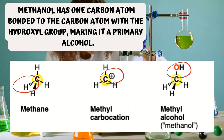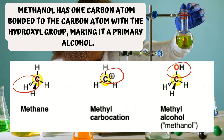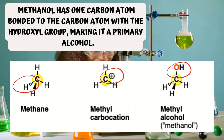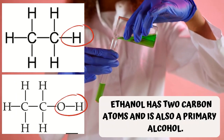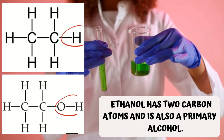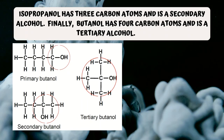Let's take a look at some examples. Methanol has one carbon atom bonded to the carbon atom with the hydroxyl group, making it a primary alcohol. Ethanol has two carbon atoms and is also a primary alcohol. Isopropanol has three carbon atoms and is a secondary alcohol. Finally, butanol has four carbon atoms and is a tertiary alcohol.